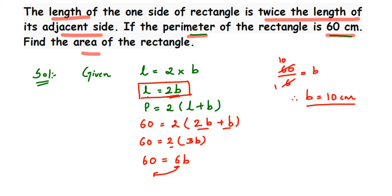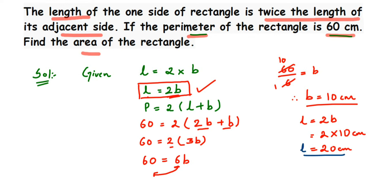Now using the relation L = 2B, I substitute: L = 2 × 10 = 20 centimeters. So length is 20 centimeters and breadth is 10 centimeters. Using these two values, we can find the area. The area of a rectangle is length × breadth, so area = 20 × 10.